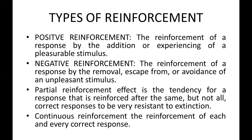So, types of reinforcement. There are four types: positive, negative, partial, and continuous. Positive reinforcement is the reinforcement of a response by the addition or experiencing of a pleasurable stimulus — for example, a child receiving candy. Negative reinforcement is the reinforcement of a response by the removal, escape from, or avoidance of an unpleasant stimulus. For example, if you don't study properly, you have to wash the dishes for a month. To escape from or avoid that unpleasant stimulus, the person studies well. That is negative reinforcement.